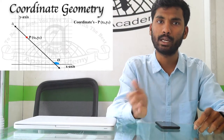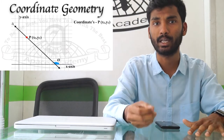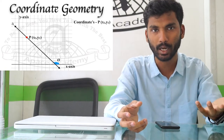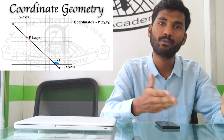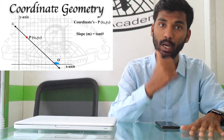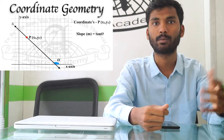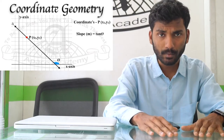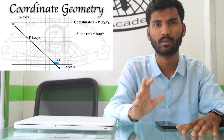Why not use inclination directly as slope? Because inclination is theta, and theta has a unit — degrees. Our equations are unitless, so we cannot substitute a unit value into a unitless equation. To solve that problem, we have slope. The formula for slope is m equals tan(theta), where theta is the inclination. Tan is a trigonometric function — I covered trigonometric concepts in the last video, go watch that as well.